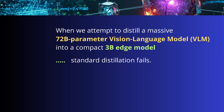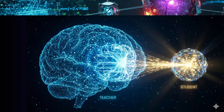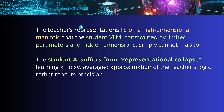Whenever we try to distill a 72 billion parameter vision language model to a small 3B edge model, all our standard distillation methodology fails, especially with vision language models. The representation of the teacher lies on a high-dimensional manifold that the student vision language model, constrained by limited parameters in the hidden dimension, cannot simply map to. The student suffers from what we call representational collapse, learning only a noisy average approximation of the teacher's logic rather than its clear precision with the higher model size.